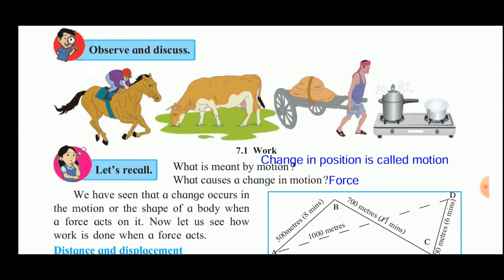Observe the figures given here. In the first picture we can see a man riding a horse. In the second picture the cow is grazing the grass. In the third case a man is seen pulling the cart. And in the fourth case there is a pressure cooker and a milk utensil on the gas. In the first three pictures there is motion, whereas in the fourth picture the pressure cooker and the utensils are at rest.